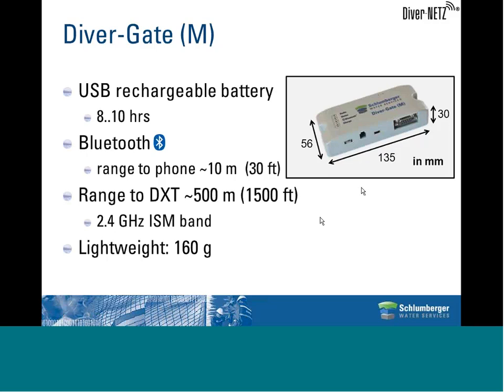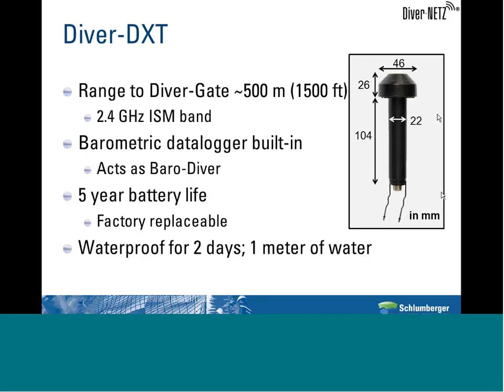The DiverDXT, the unit placed in the well, has a diameter of almost two inches, and the smaller diameter is a little bit less than an inch. It also contains a battery that lasts for about five years depending on how you use it. The range to the DiverGate is the same as from the DiverGate to the DXT—up to 500 meters.